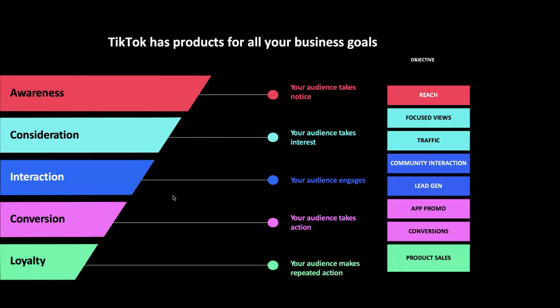You can set up various ad objectives on TikTok Ads Manager - think of these as campaign types. A reach campaign or focus views campaign works best for brand recognition, optimizing for people to watch your videos for at least six seconds. A traffic campaign drives people to click and visit your website. A conversion campaign optimizes towards people more likely to buy after seeing a TikTok ad. TikTok ads allow you to achieve full funnel marketing, and these objectives are very similar to Meta, so if you've had experience with Meta ads, you'll be familiar with these structures.